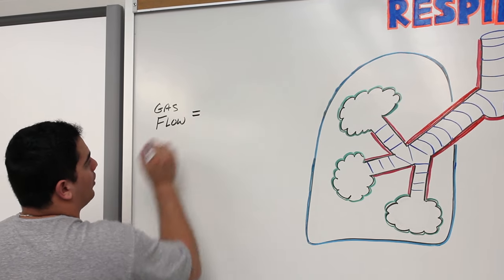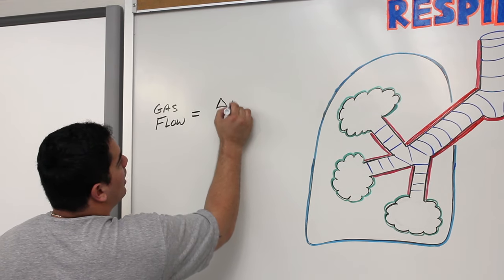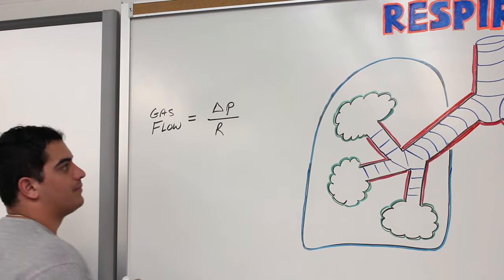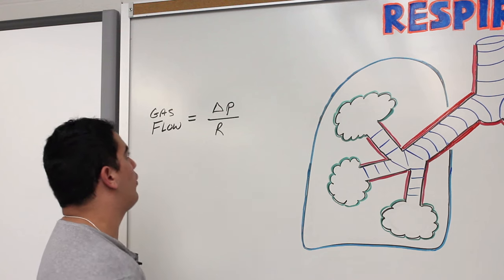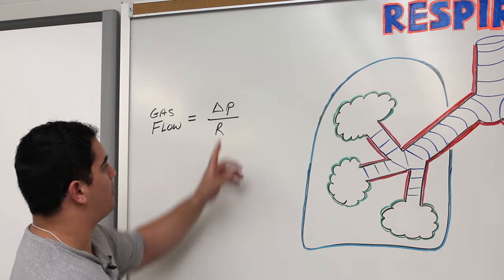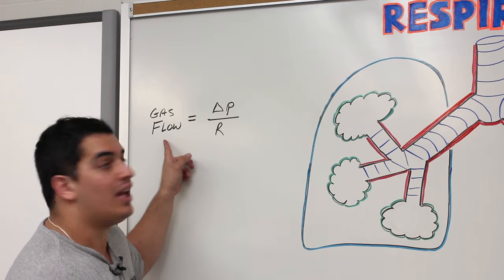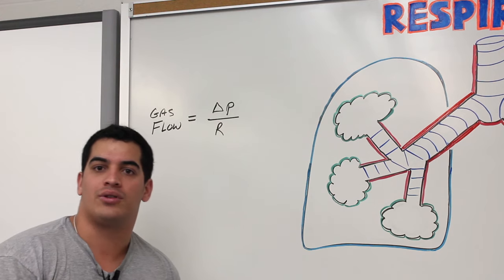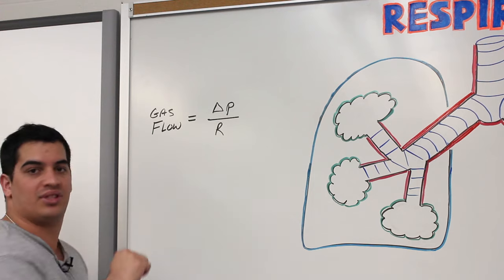Gas flow is equal to the change in pressure over resistance. So gas flow = ΔP / R. Now we're going to explain how pressure changes the gas flow, and then we're going to express how resistance changes the gas flow. First, let's derive this mathematical formula and understand it, and then we'll explain those differences.